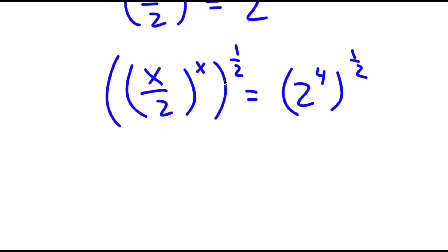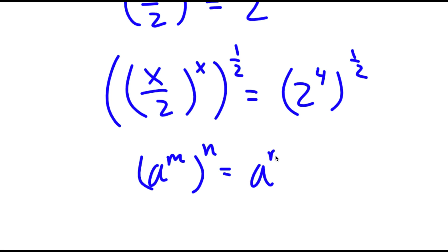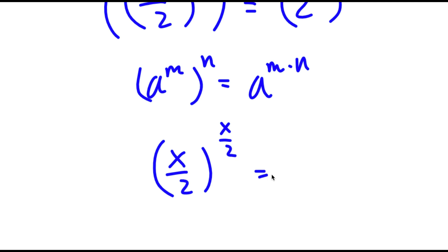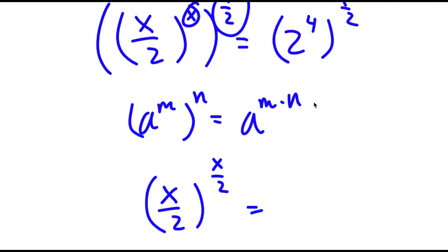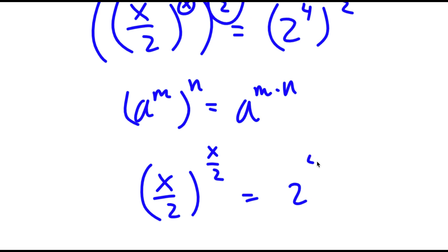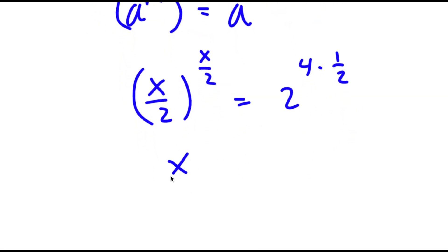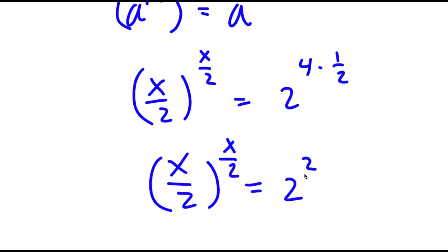Now, if I have something in the form a to the power of m to the power of n, this is equal to a to the power of m times n. So x over 2 to the power of x to the power of 1 half — I can multiply x and 1 half. So now I get x over 2 to the power of x over 2, is equal to 2 to the power of 4 to the power of 1 half. That's 2 to the power of 4 times 1 half. 4 times 1 half is simply 2. So now I have x over 2 to the power of x over 2 is equal to 2 to the power of 2.